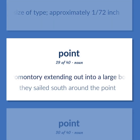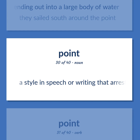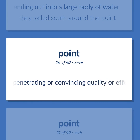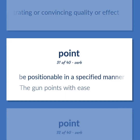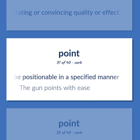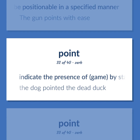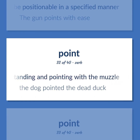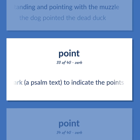A promontory extending out into a large body of water. They sailed south around the point. A style in speech or writing that arrests attention and has a penetrating or convincing quality or effect. Be positionable in a specified manner. The gun points with ease. Indicate the presence of game by standing and pointing with the muzzle. The dog pointed the dead duck. Mark a psalm text to indicate the points at which the music changes.